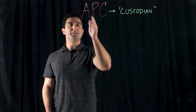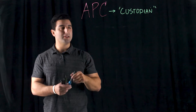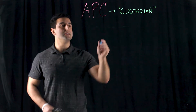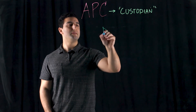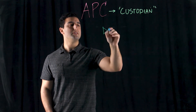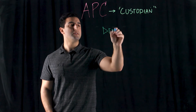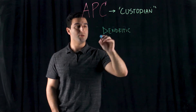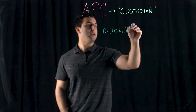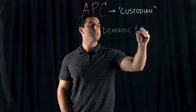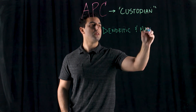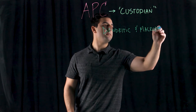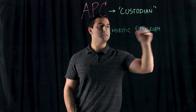The different types of APCs we'll be talking about here are the professional APCs. The first two, which are the very standard, are the dendritic cells — which are the more potent — and the macrophages. These two cells are phagocytic.